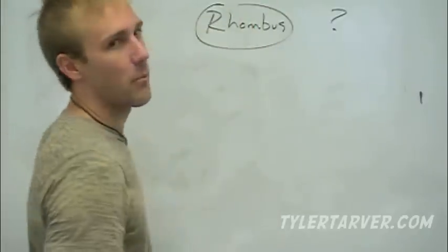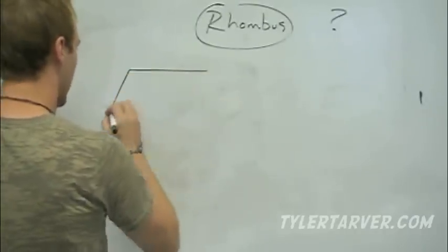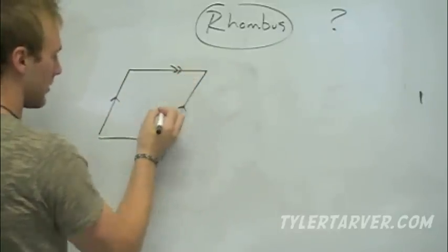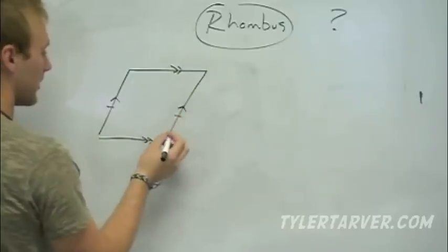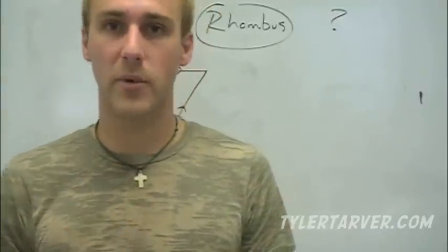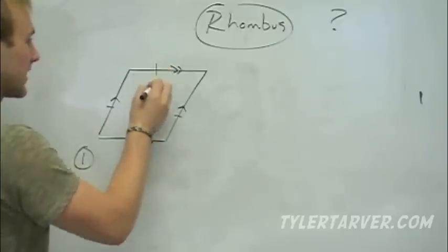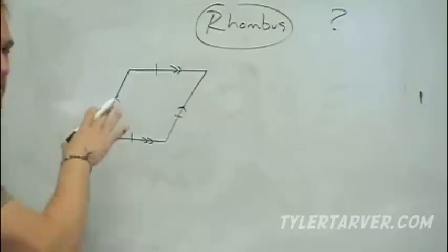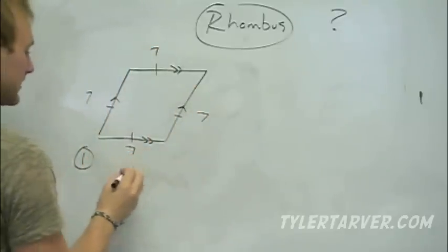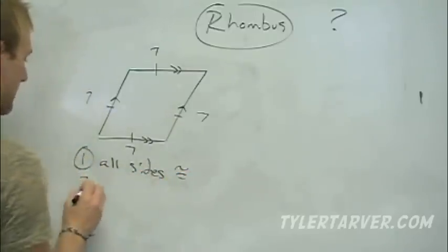Now we're talking about a rhombus. It's still a parallelogram, so all the properties of parallelograms still apply — opposite sides are parallel, opposite sides are congruent, opposite angles are congruent, all that jazz. Here's the thing that makes a rhombus special: number one, all the sides are the exact same measure. It doesn't always have to be shaped like a diamond. All the sides are the same — if this is 7, this is 7, this is 7, this is 7. All sides congruent.